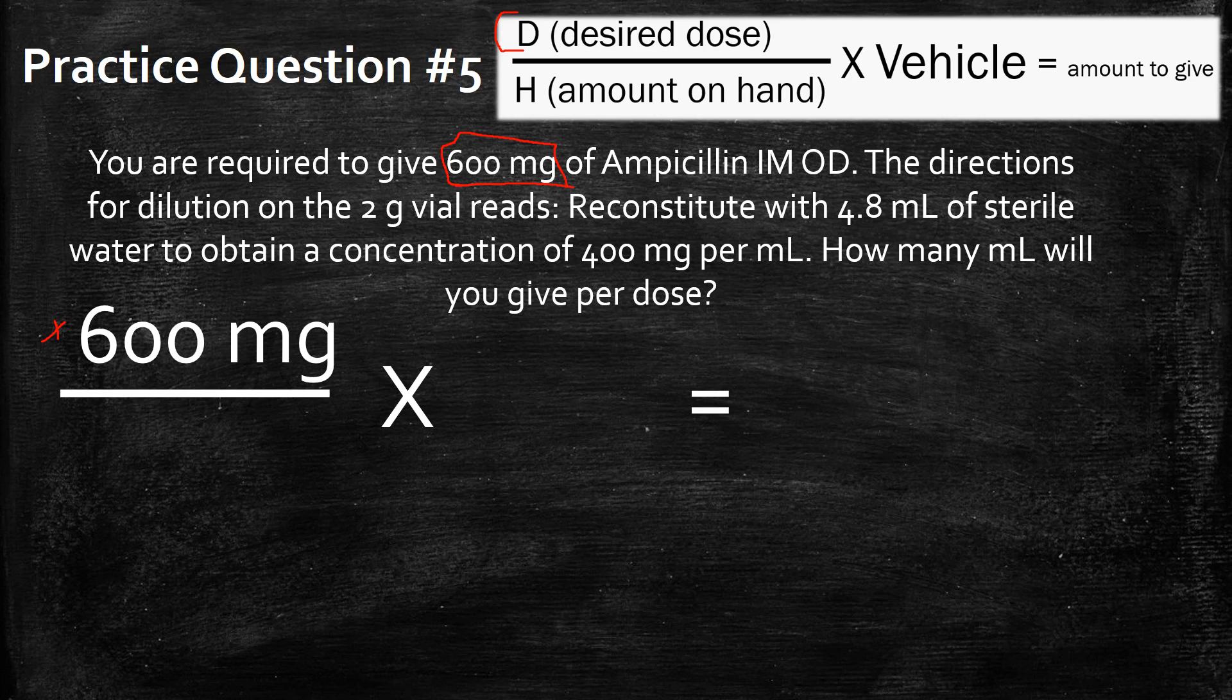The next part, the amount on hand. Well, directions for dilution on the 2-gram vial read. Well, you've got this kind of here, but that's not really the amount you have on hand because then you've got to dilute it. This isn't really your vehicle because it's going to be diluted in a different way. What you have to do is actually read the final concentration that it will always give you. And that's going to be right here.